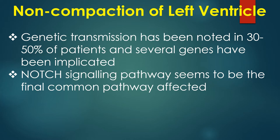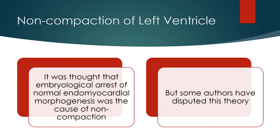The Notch signaling pathway seems to be the final common pathway affected. It was thought that embryological arrest of normal endomyocardial morphogenesis was the cause of noncompaction, but some others have disputed this theory.